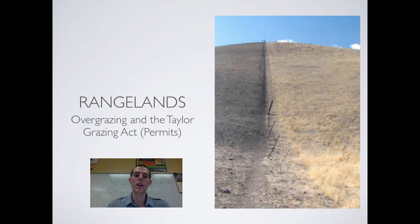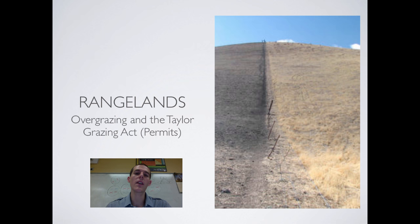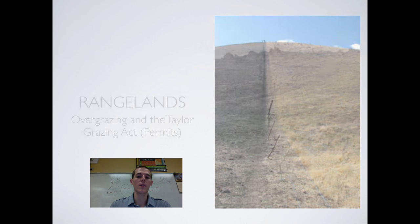In 1934, the Taylor Grazing Act was put into place, requiring ranchers to buy permits in order to graze their animals on publicly owned lands. The idea was that if people have to buy permits, they will put fewer animals on the land and manage it more responsibly. However, the price of permits was set very low, so it didn't do much to mitigate the problem, and the Bureau of Land Management generally spends more money managing the land than it takes in from permits.